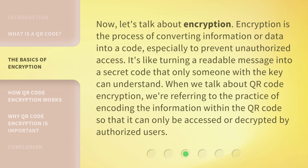Now, let's talk about encryption. Encryption is the process of converting information or data into a code, especially to prevent unauthorized access. It's like turning a readable message into a secret code that only someone with the key can understand. When we talk about QR code encryption, we're referring to the practice of encoding the information within the QR code so that it can only be accessed or decrypted by authorized users.